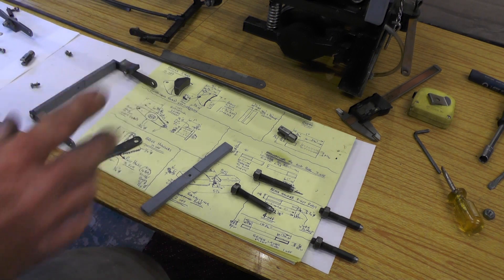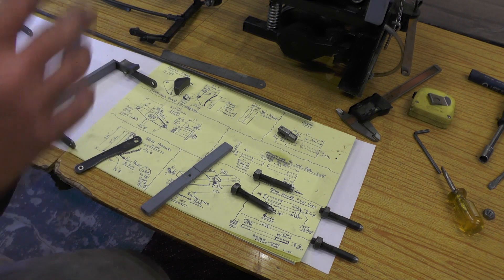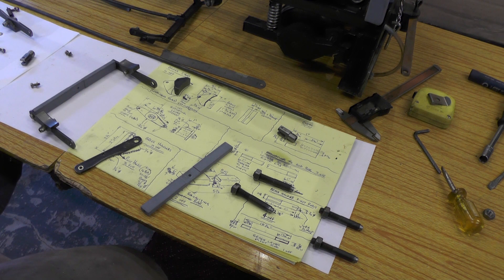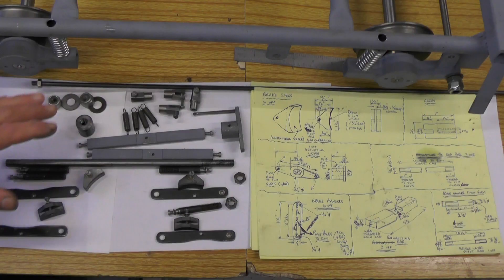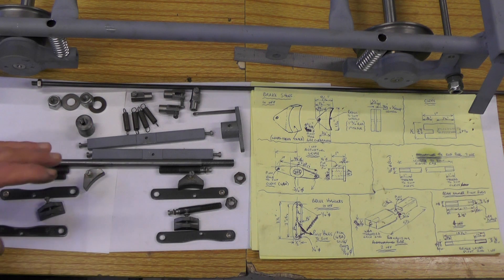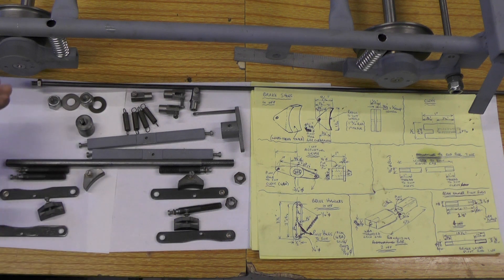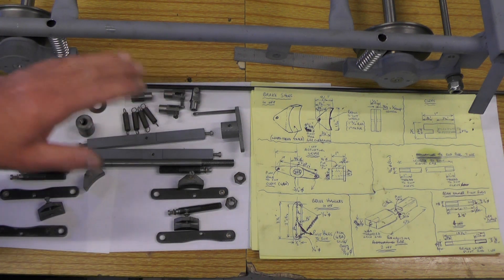What I'll do then, I'll go ahead and assemble it all before I paint it and then show you it all as it's going to be located on the riding car. That's all the braking components manufactured now from scratch.